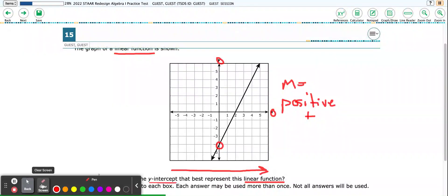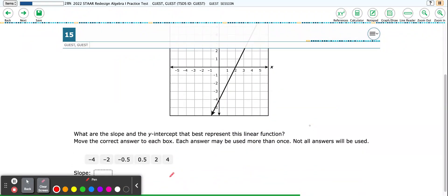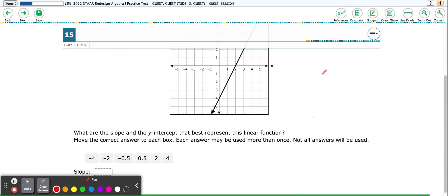So I'm going to clear my screen, and we're going to look at some of these numbers here. So the numbers, remember, my slope is positive, and my y-intercept is right here at negative 4. It says move the correct answer to each box. So I know the y-intercept is the easy one. That's negative 4.